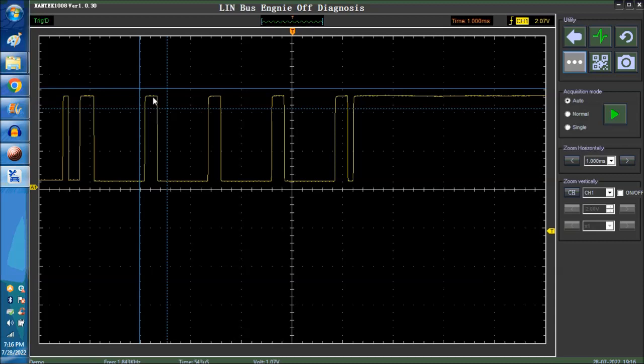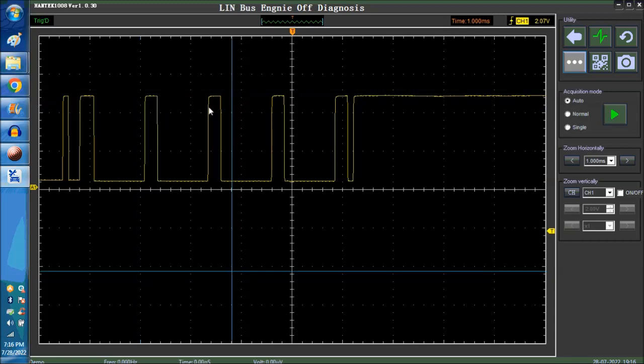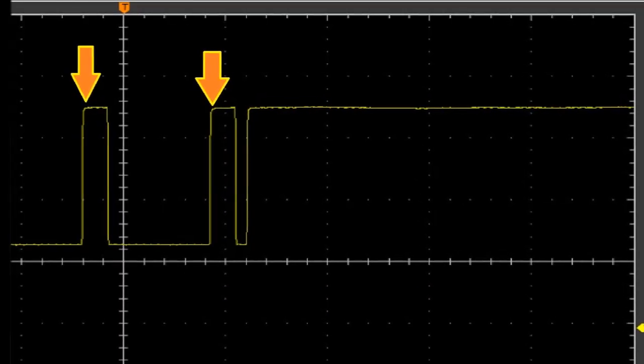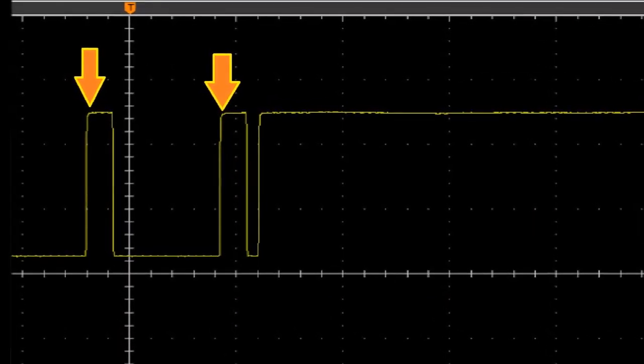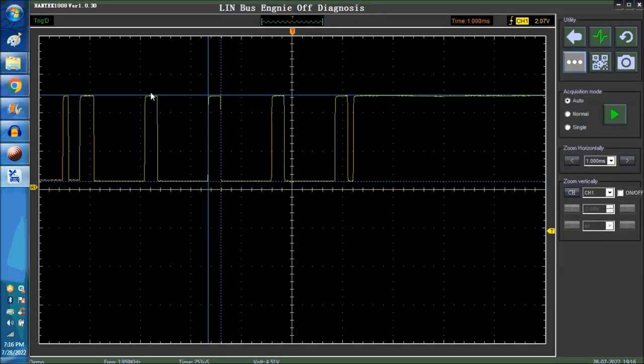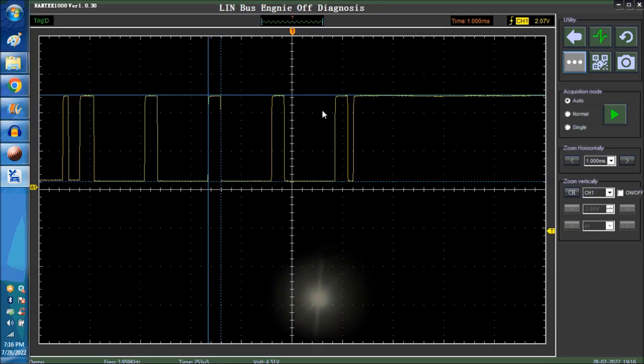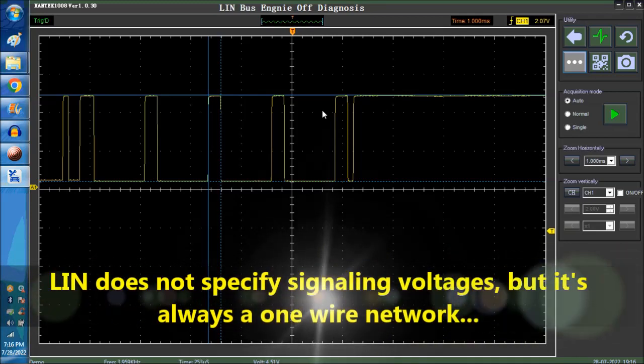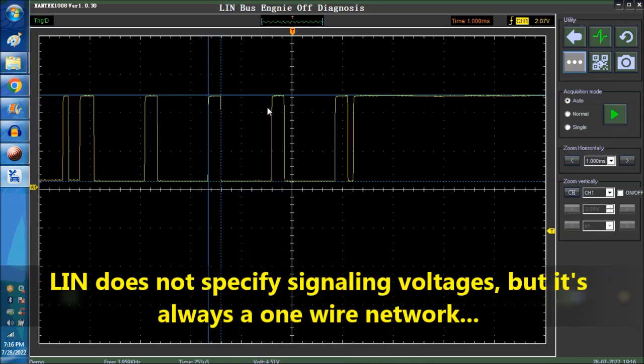You want to make sure that the square wave is nice and square. You don't want to see too many dips here. Some rounding is okay because it just has to do with the resistance of the impedance of the wire or the circuit and so on and so forth. Basically that's the way it is, a single wire network, one wire only. So basically it's very simple. We went briefly before into the LIN network analyzer.